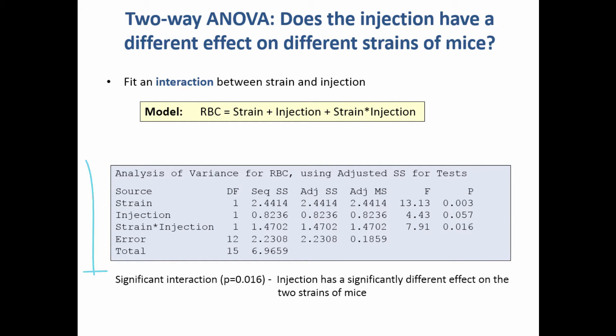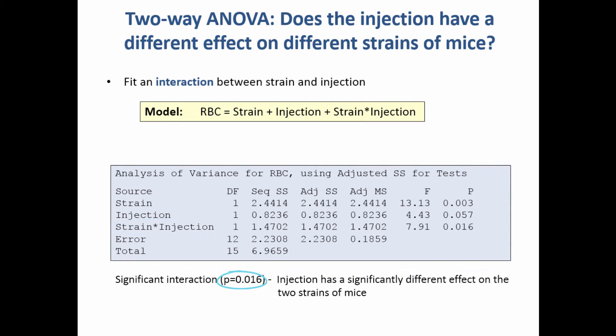We get an analysis of variance table with a third row added to address that interaction, and we find a significant p-value — less than 0.05 — which shows that the injection does have a significantly different effect on the two strains of mice. So although on average over the two strains the injection effect wasn't significant, we have enough evidence to say the effect size was different between the two strains, and we'll want to find out which strain showed a bigger difference and whether that was actually significant.